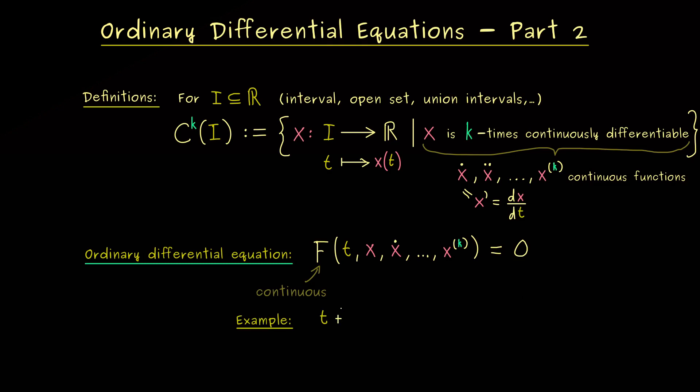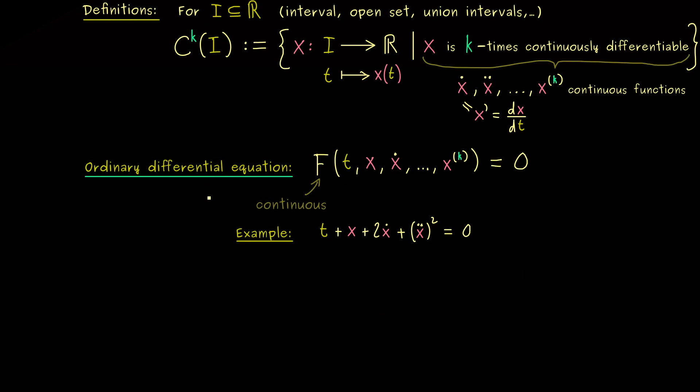So you see in general this is what we mean when we talk of an ordinary differential equation of order k. And maybe let's immediately look at an example for such an equation. So we could have t plus x plus 2 times x dot plus second derivative of x squared, and then this should be equal to 0. So there you see this is a well defined ordinary differential equation of second order. So the highest derivative that occurs in the equation gives us the order. And at this point you might say it might be easier for us if we first start with first order differential equations. In fact soon we will see why it is very helpful to start with the first order differential equations.